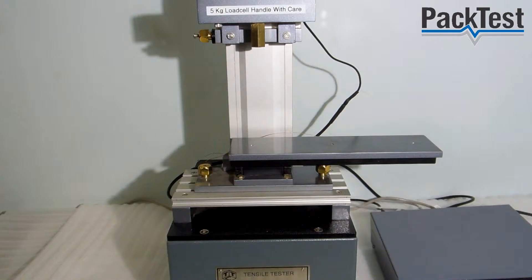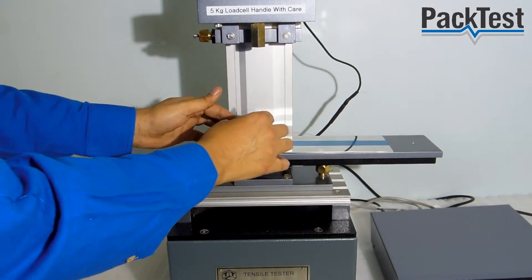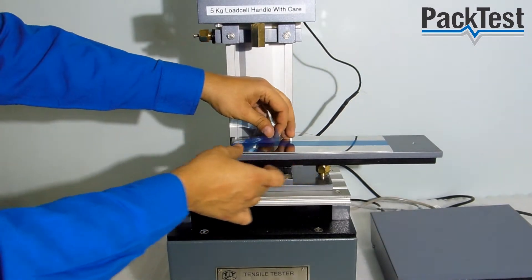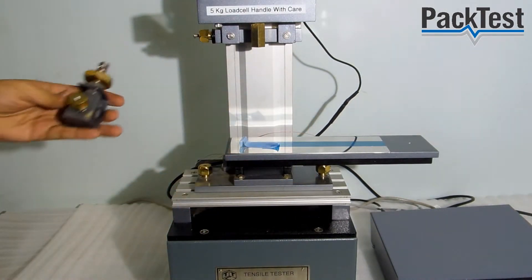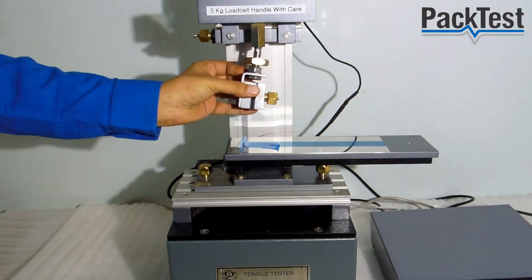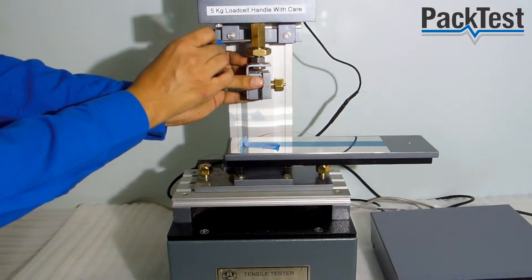Place the metal plate along with the sample onto the base plate. Fix the top grip as shown here and lock the check nut to hold it in position.